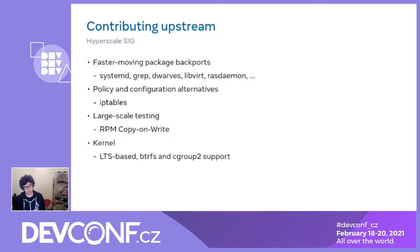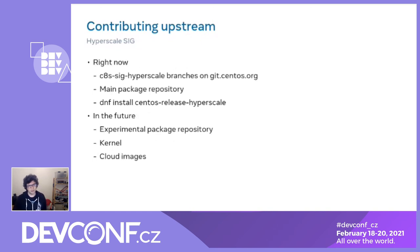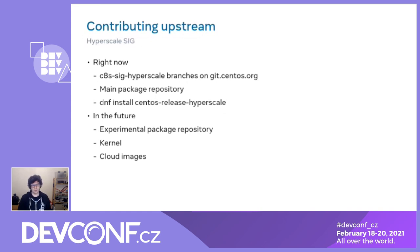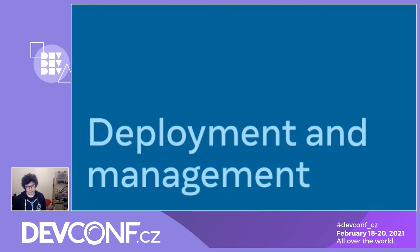For work like RPM copy-on-write, which involves rebuilding effectively the entire packaging stack, we believe there's value in having a version tested and deployed in production available somewhere for people to test before it gets merged in Fedora. There are also discussions about building an alt kernel for CentOS to have better feature enablement for things like Btrfs and cgroup v2, though this is still at the discussion stage. Right now, if you go to git.centos.org you can find branches for the Hyperscale SIG, and there's already a package repository you can enable — dnf install centos-release-hyperscale.